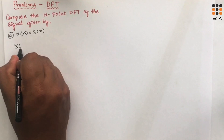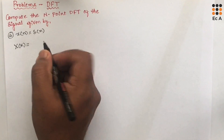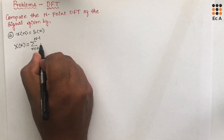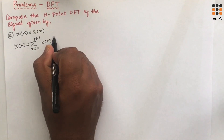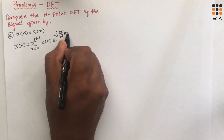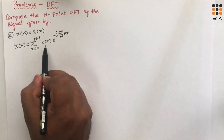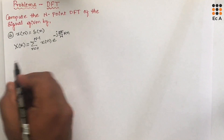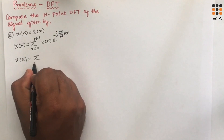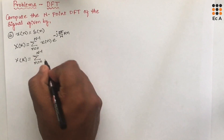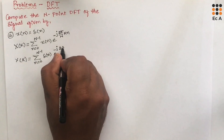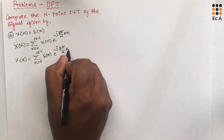The DFT formula is given as X(k) = summation from n=0 to N-1 of x(n) multiplied by e^(-j2πkn/N). In place of x(n), let us substitute δ(n), so we can write X(k) = summation from n=0 to N-1 of δ(n) · e^(-j2πkn/N).